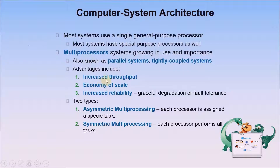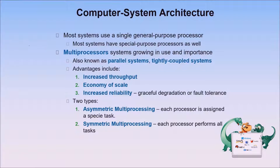For multi-processor systems, there is increased throughput — faster execution, but not 100% linear speed-up. The economy of scale allows peripherals, disks, and memory to be shared among processors. Increased reliability means that failure of one CPU allows the system to slow down rather than crash.